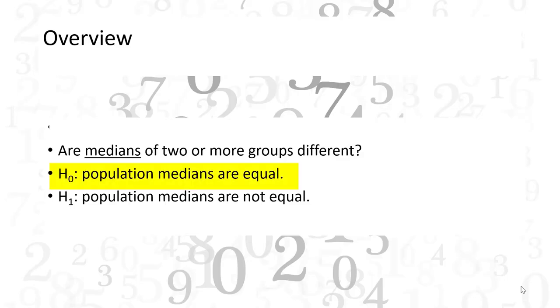The null hypothesis is that the population medians are equal. The alternate hypothesis is that the population medians are not equal.